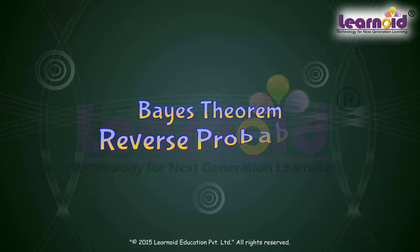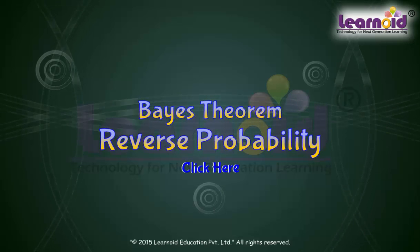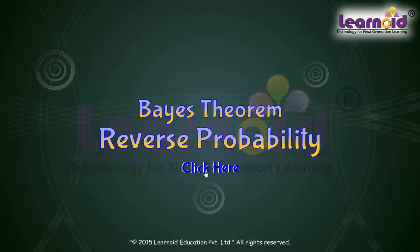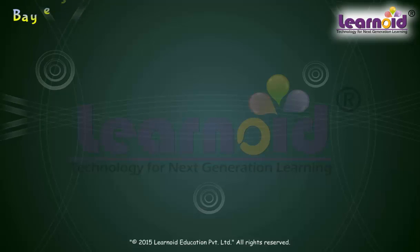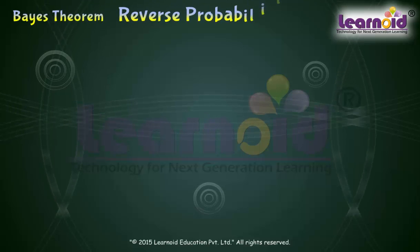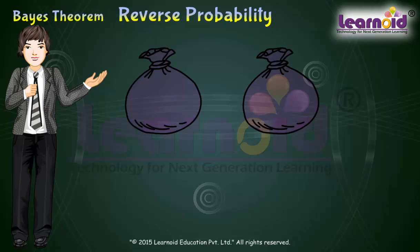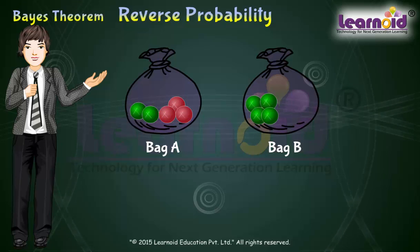Bayes Theorem: Reverse Probability. Rohan has two bags A and B. Bag A contains two green and three red balls, and bag B contains four green and five red balls. Rohan drawn at random one ball from one of the bags.